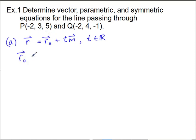So we need to figure out the initial position vector. Well, the initial position vector can be the vector that points to either of these given points. So it could be the vector from the origin to the point P, or it could be the vector from the origin to the point Q. And so I'm just going to go ahead and arbitrarily choose OP. So that is going to be negative 2, 3, and 5. But it would be equally good if we chose OQ.